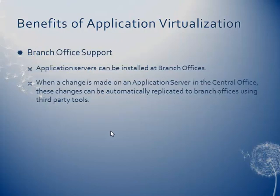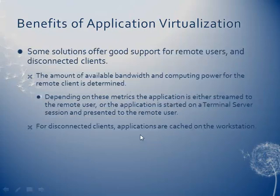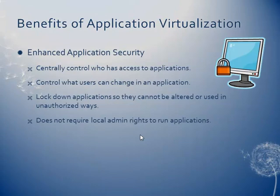Application servers can be installed in branch offices so that you can set it up so those applications are automatically replicated out to branch offices using third-party tools, which is again a nice feature for automatic updates. Some solutions also offer good support for remote users or disconnected clients — you can actually run this application virtualization solution while you're not even connected to the network. For disconnected clients, the applications are cached on the workstations. You also have enhanced application security: you can centrally control who has access to the applications, control what users can or cannot change in an app, and lock down applications so they're not altered or used in any unauthorized way.